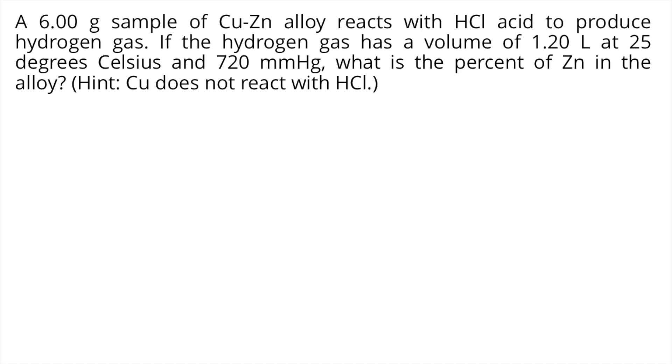According to the hint, copper does not react with HCl, which means only zinc reacts with HCl. First, write the reaction between zinc and HCl: Zn + 2HCl → ZnCl2 + H2. This is the balanced reaction between zinc and HCl.